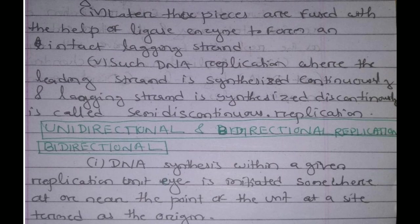In semi-discontinuous replication, we can consider unidirectional and bidirectional replication. In unidirectional replication, one of the two sides will be replicated in one direction, while in bidirectional replication, the replication proceeds in opposite directions from the origin.